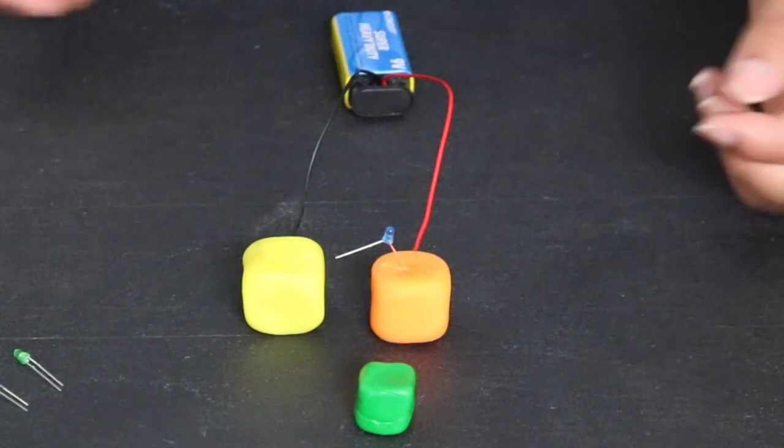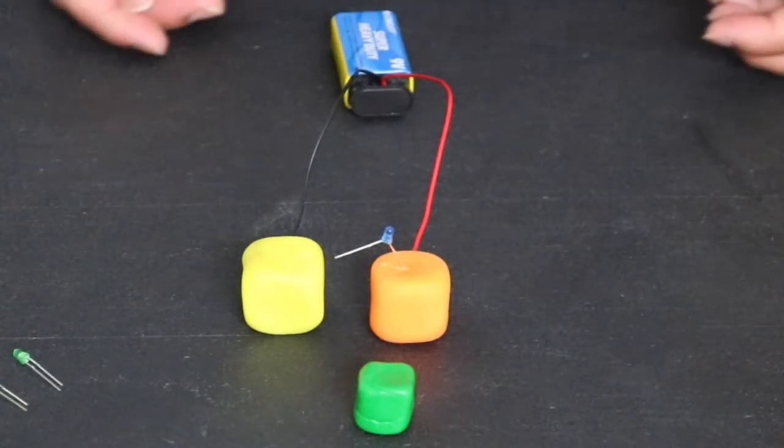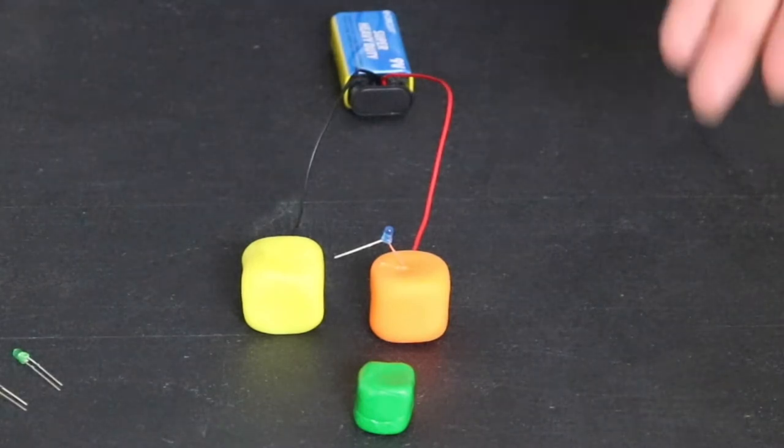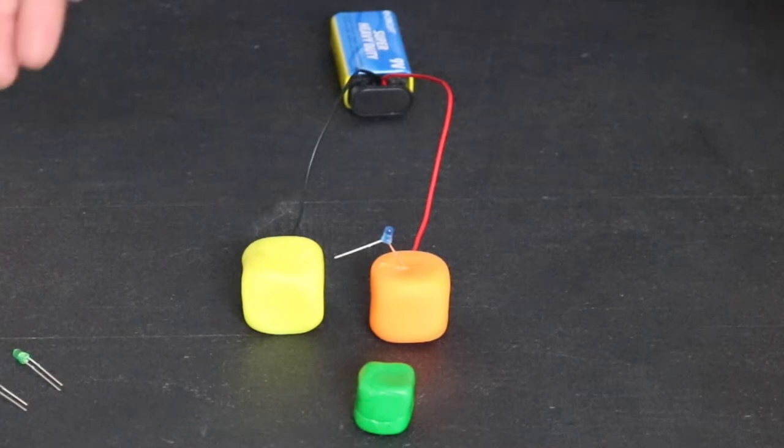At this point, your long leg should be connected to the same play-doh that is connected to the red wire. Can you tell what is happening right now? Nothing. Right now, we still have an open circuit. There is no complete path for electricity to flow.